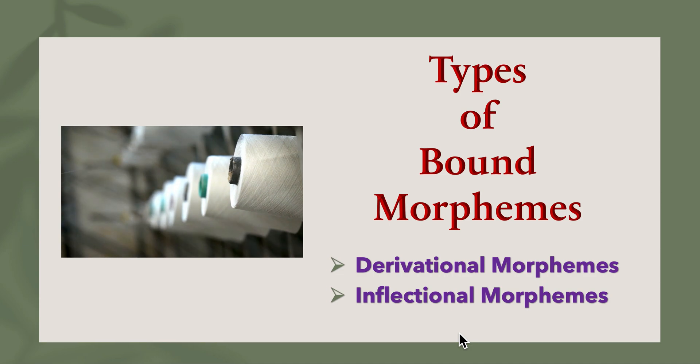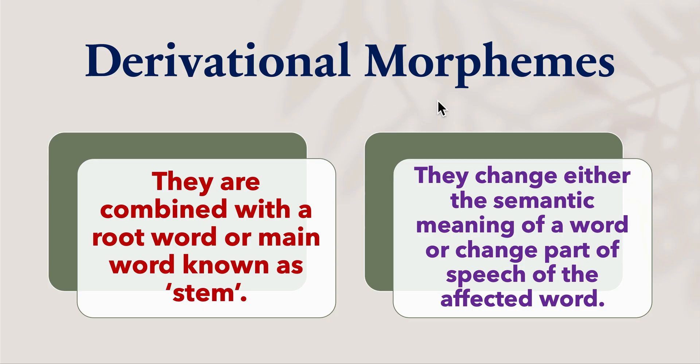Hello and welcome to the topic: types of bound morphemes. Derivational morphemes and inflectional morphemes. Derivational morphemes are combined with a root word or main word known as a stem.